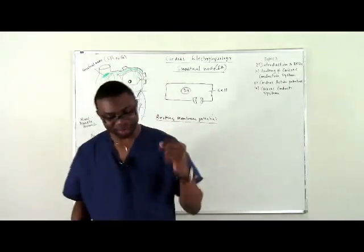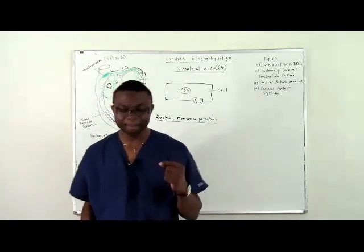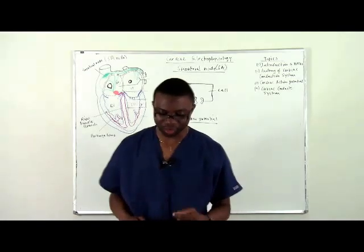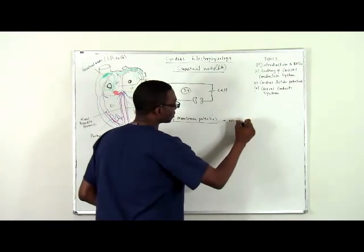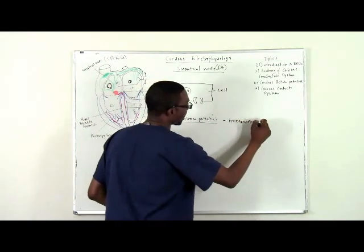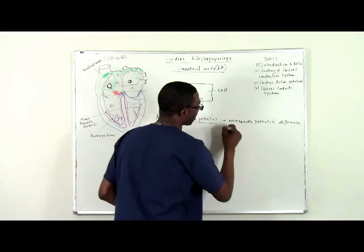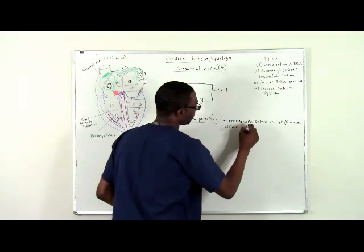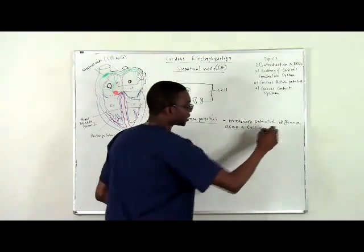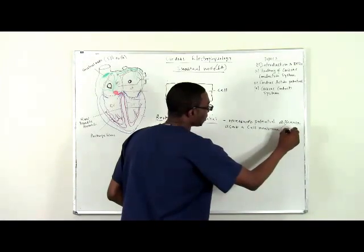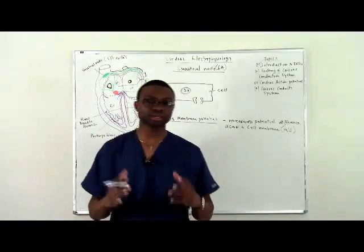So resting membrane potential is actually expressed as the measured potential difference across the cell membrane. This is often measured in millivolts. These values have already been calculated.